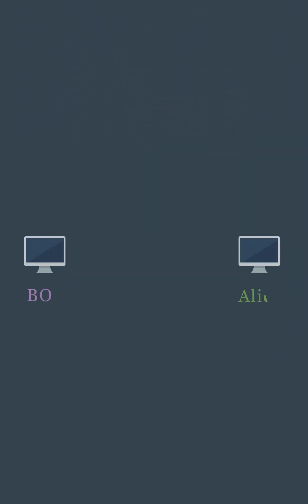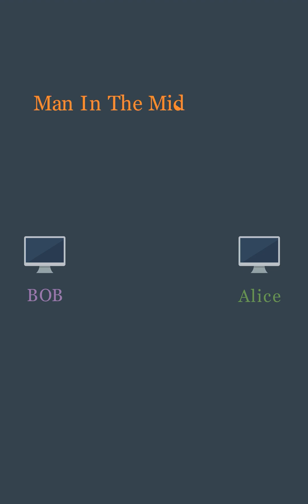In normal communication, two nodes, let's say Alice and Bob, communicate. Alice sends a message to Bob, and upon receiving the message, Bob sends an acknowledgement back to Alice, indicating that he received the message. In a man-in-the-middle attack, a hacker intercepts the communication channel between these two.